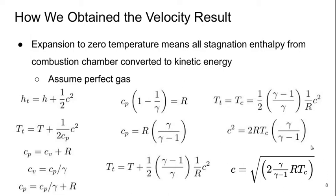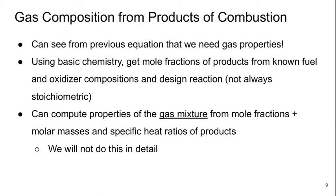And if I take that and just take the square root, then we get the expression for c that we're after. So we see that we need the gas properties R and gamma in order to analyze the flow in a rocket nozzle.